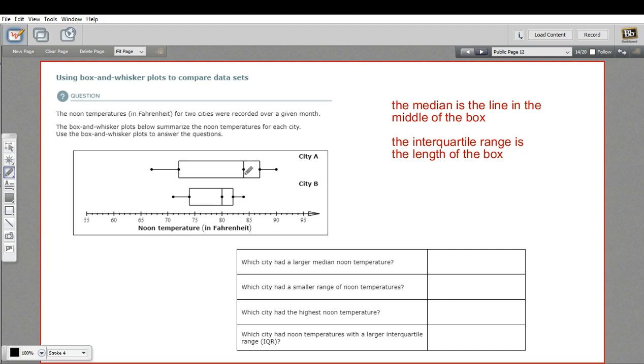The line in the middle is going to be your median. So that's the middle value. If you want to find the median, just take that line and go down and find the number on the graph.